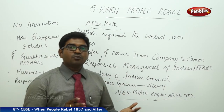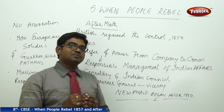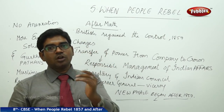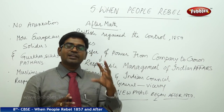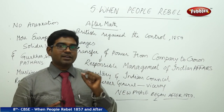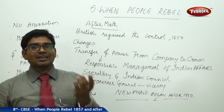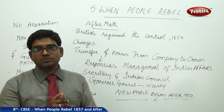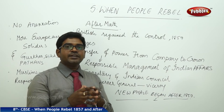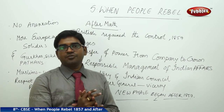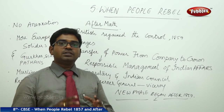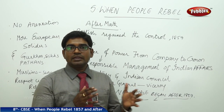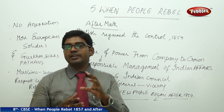In this lesson, we have discussed how people reacted when the Britishers started to impose new laws. Laws declared landlords and zamindars to collect high taxes using rigid methods, causing many peasants who could not repay loans to suffer greatly. The date of 10th May 1857 is considered a historical moment in Indian history.